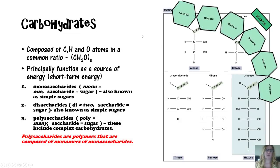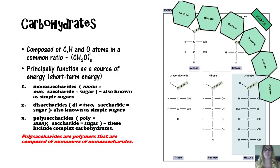Carbohydrates are made up of just three elements: carbon, hydrogen, and oxygen. The ratio is always the same — CH2O, with twice as much H as C and O. Carbohydrates are good for short-term energy storage, while fats are better for really long-term storage.